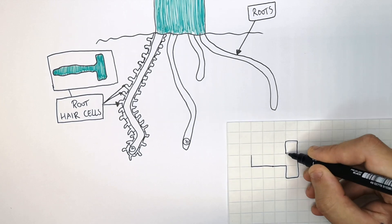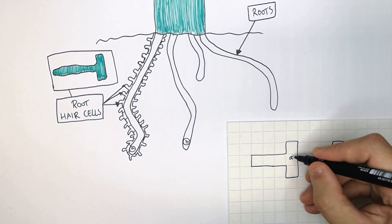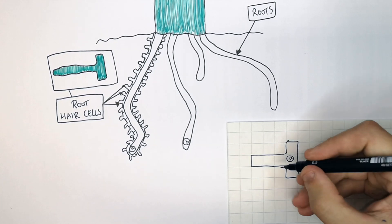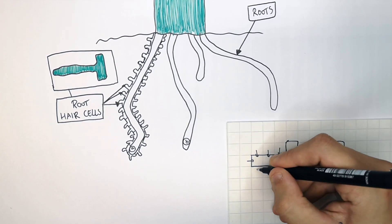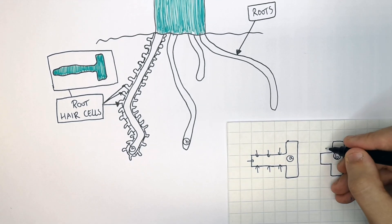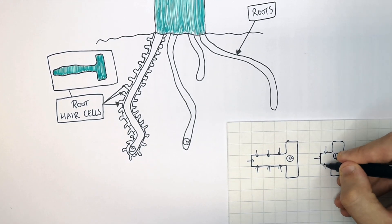I'm now going to draw two to show you how surface area affects the rate of absorption. So you've got root hair cells A and B. Root hair cell A, as you can see here, can absorb at seven different points because it's got a larger surface area than B, which can only absorb at three different points.